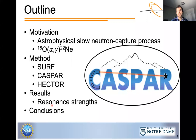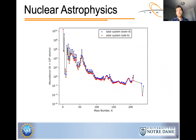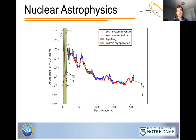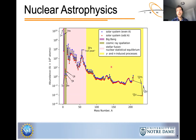One of the goals in nuclear astrophysics is to explain the origin of the elements, and part of that goal means understanding the solar system abundance pattern. We know that Big Bang nucleosynthesis produced mostly hydrogen, helium, and a small amount of lithium-7. Cosmic ray spallation is believed to be responsible for lithium-6, beryllium-9, boron-10, and boron-11. Nuclear fusion inside stars and nuclear statistical equilibrium is responsible for nuclides from mass 12 up to the iron peak.